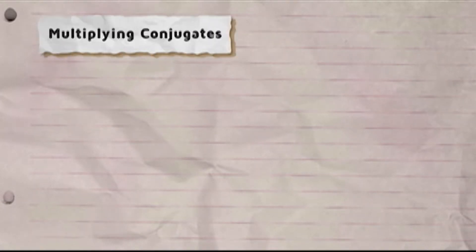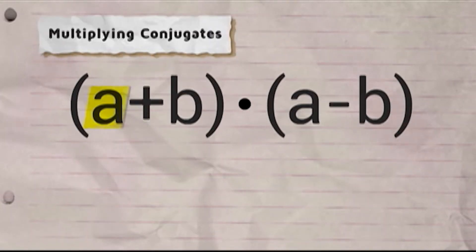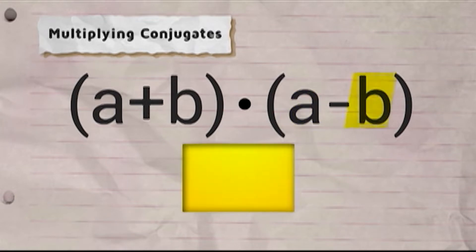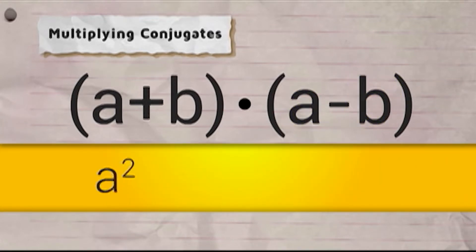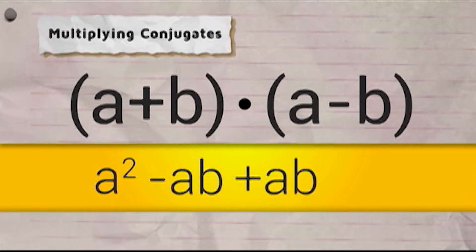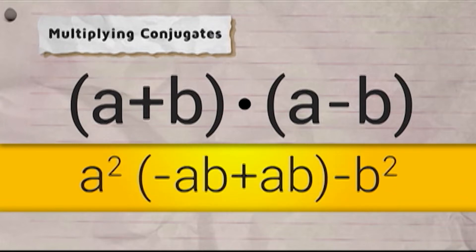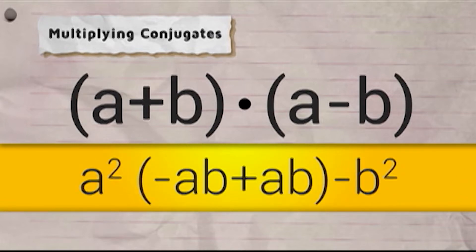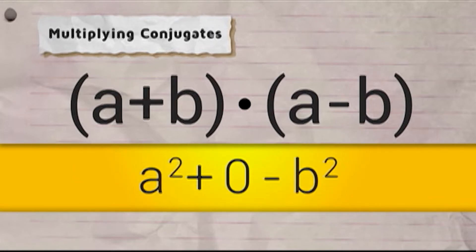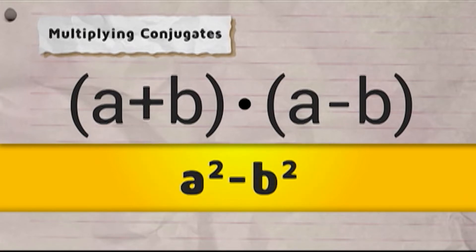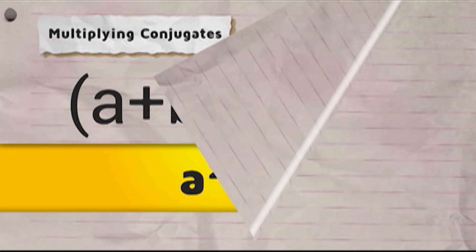Using the FOIL method when we multiply conjugates: quantity a plus b times quantity a minus b equals a squared minus ab plus ab minus b squared, which equals a squared plus zero minus b squared, equals a squared minus b squared.